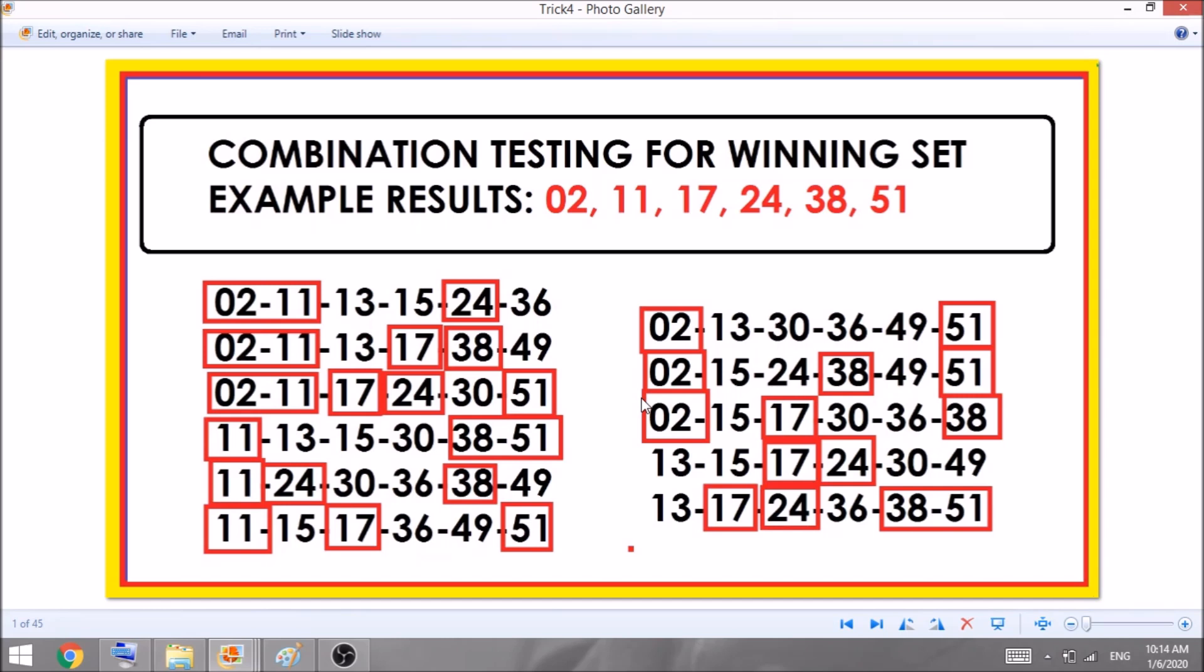So based on this strategy, as you can see, we are not only aiming for the jackpot prize, we are also aiming to win all the consolation prizes to recover our losses for the bets that we have made. Hope my explanation is very clear on this strategy. This is very simple to execute.